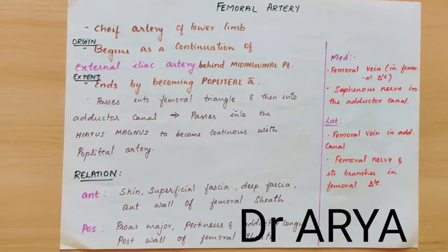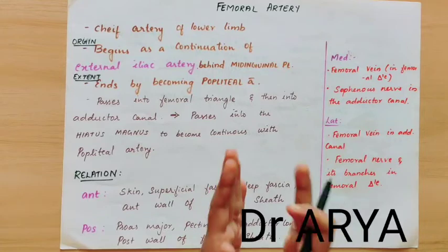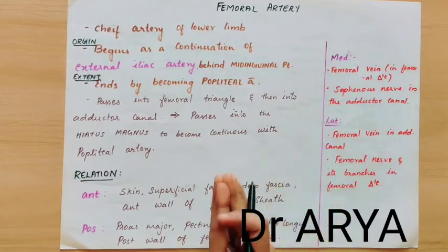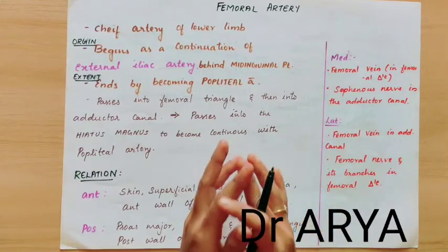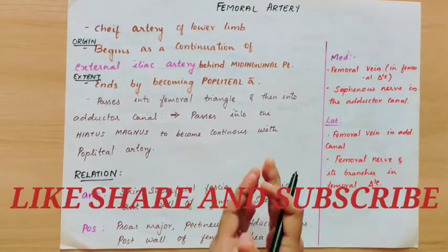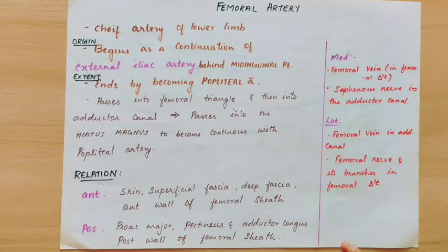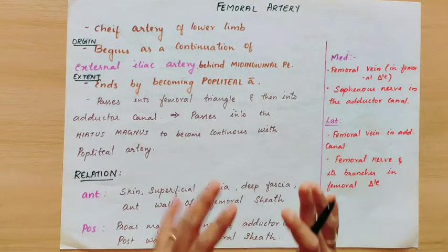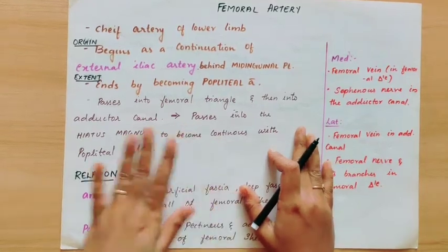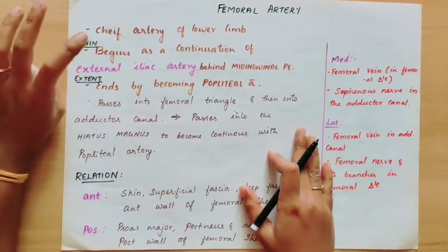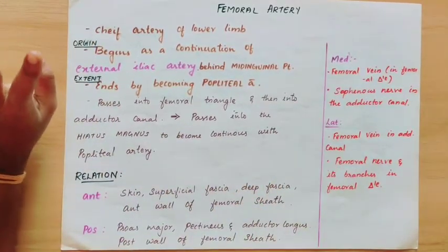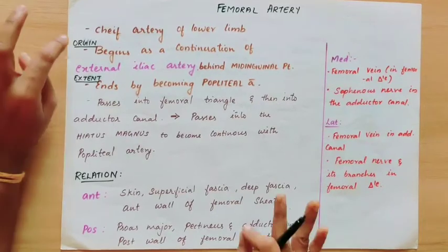Hi, hello and welcome back to my channel. In this video, we will cover the femoral artery, which is one of the important five-mark questions. In a previous video, I covered all important arteries of the whole body with their names, so pathing will be very easy for you. Now we will move on to the femoral artery. The femoral artery is the chief artery of the lower limb.